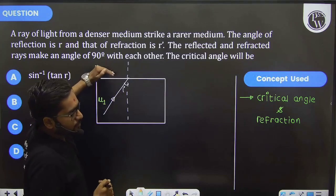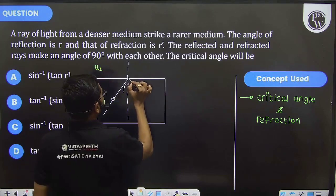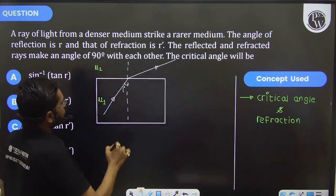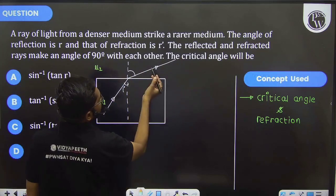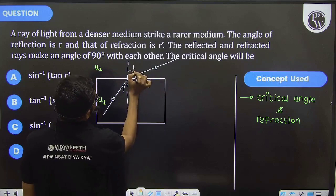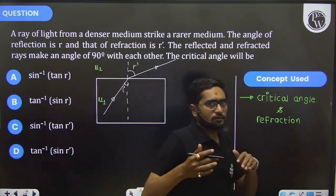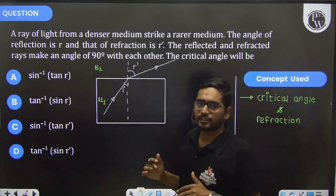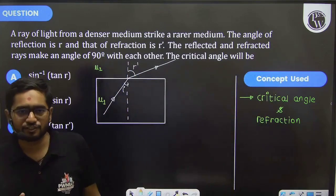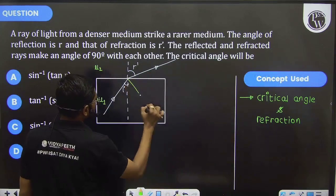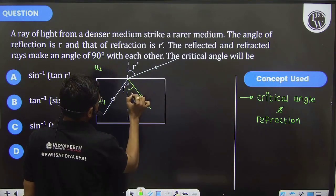You have an incident ray of light with angle of incidence i. It strikes from denser to rarer, so we know the light will go away from the normal. This is our angle of refraction r'. But we also know light is not refracting 100 percent—it's partial refraction as well as partial reflection. That reflection is r, and these two rays are perpendicular to each other.